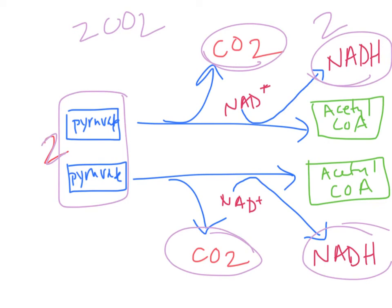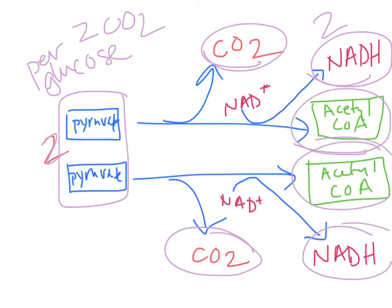Per glucose. That's what we started with, one glucose—we've got to follow that. Two acetyl CoAs come out.